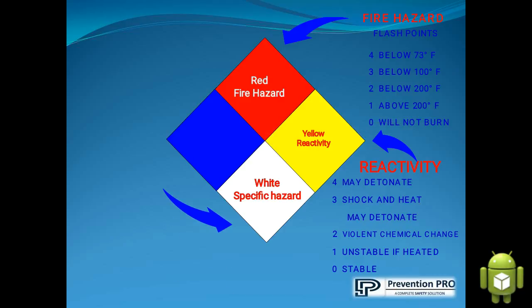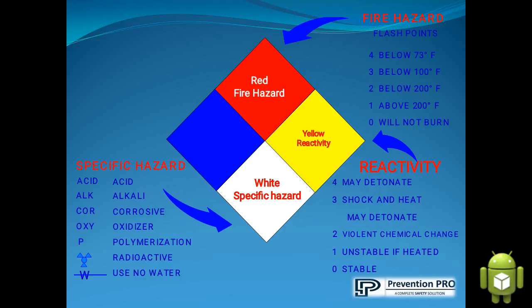Now we are going to see about the white color, which represents specific hazards. Here the alphabets are used. If the alphabet ACID is given, it contains acid. ALK means it contains alkali. COR means it is corrosive. OXY means it is an oxidizer — it reacts with oxygen to liberate oxygen. P means it has the ability of polymerization. A radiation symbol means it is radioactive. And if a capital W is struck out, it means you should not use water on it.